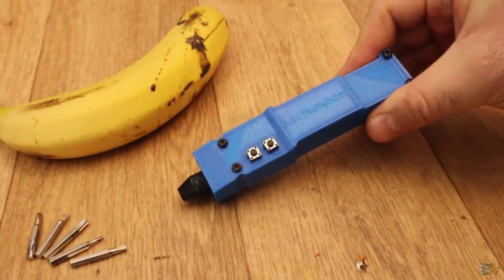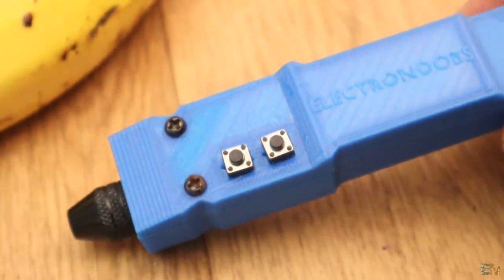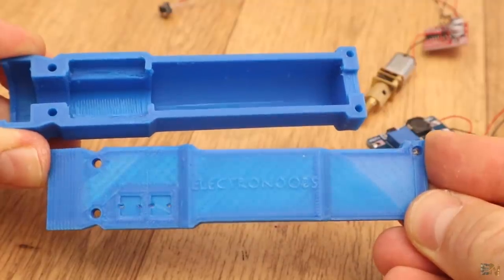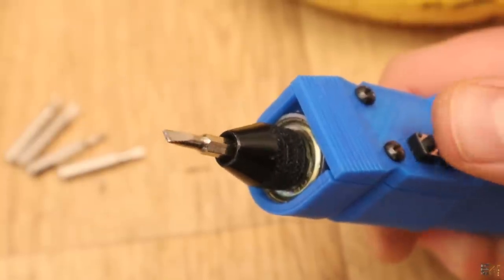This is a homemade electric screwdriver. It has a 3D printed case that I've designed. It uses two push buttons to rotate clockwise or counterclockwise.